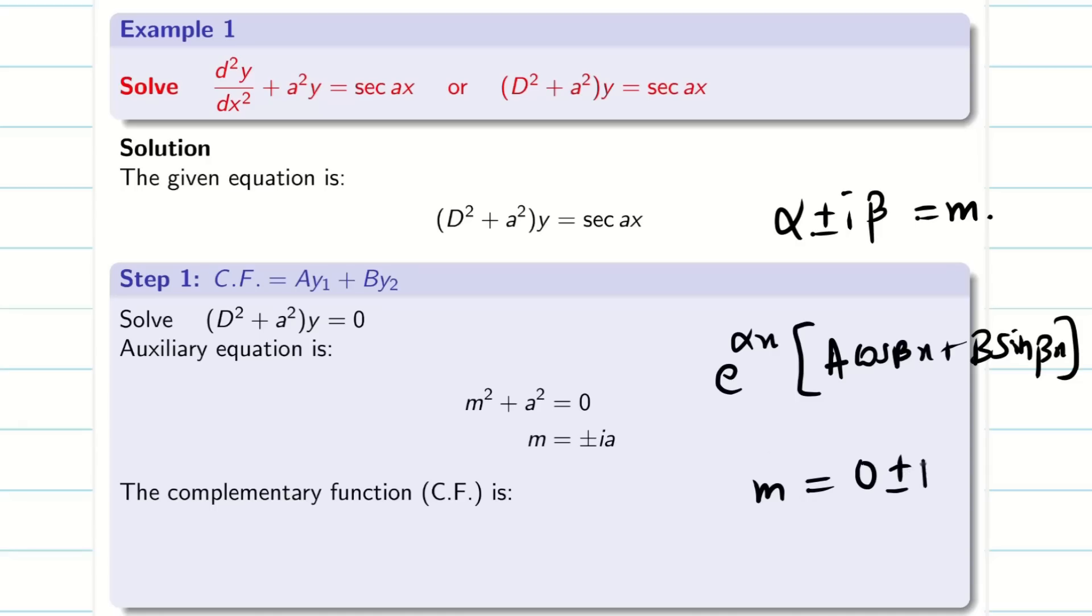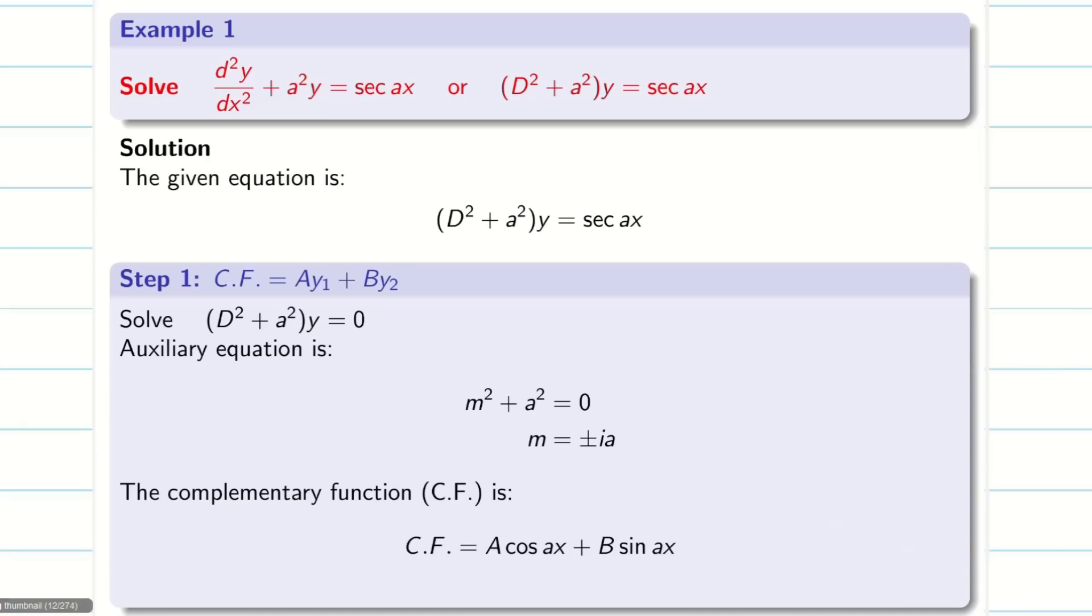But now, my roots are 0 plus or minus ia. So, what will happen here? e^(0x) will become 1. So, I can directly write it as A cos ax + B sin ax. So, in my step 1, I found my y₁ is cos ax and my y₂ is sin ax. Done. So, step 1 gets over, A y₁ plus B y₂.